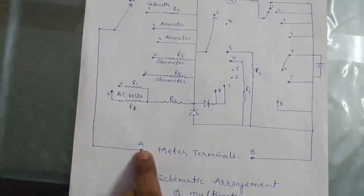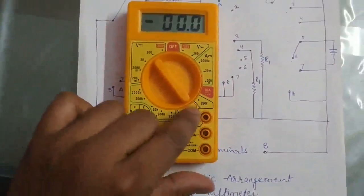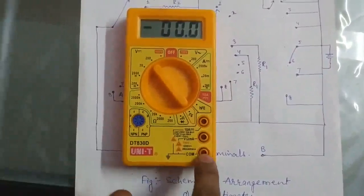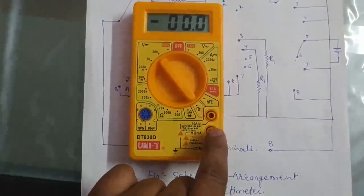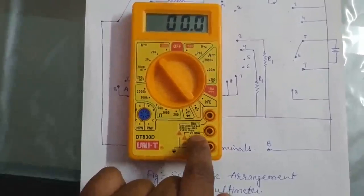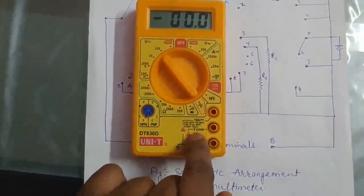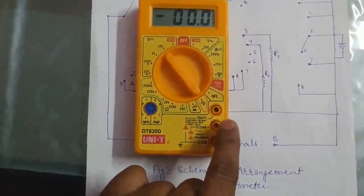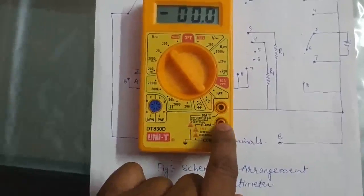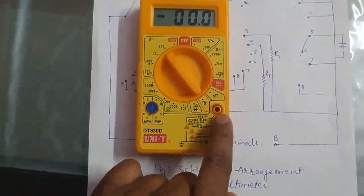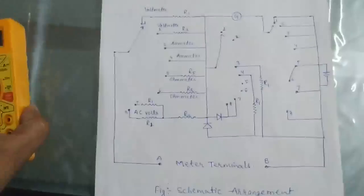These two terminals, A and B - this indicates COM is common. This port is for voltage, current milliampere, and ohm. These three ports measure voltage, current, and ohm. This port measures amperes.